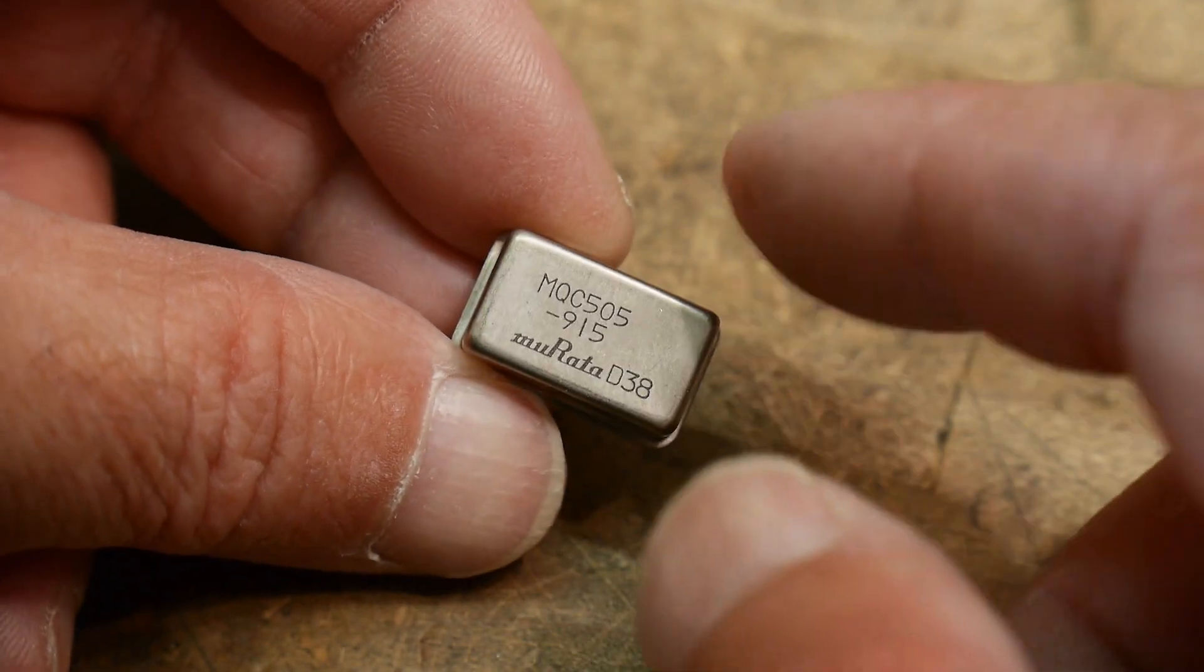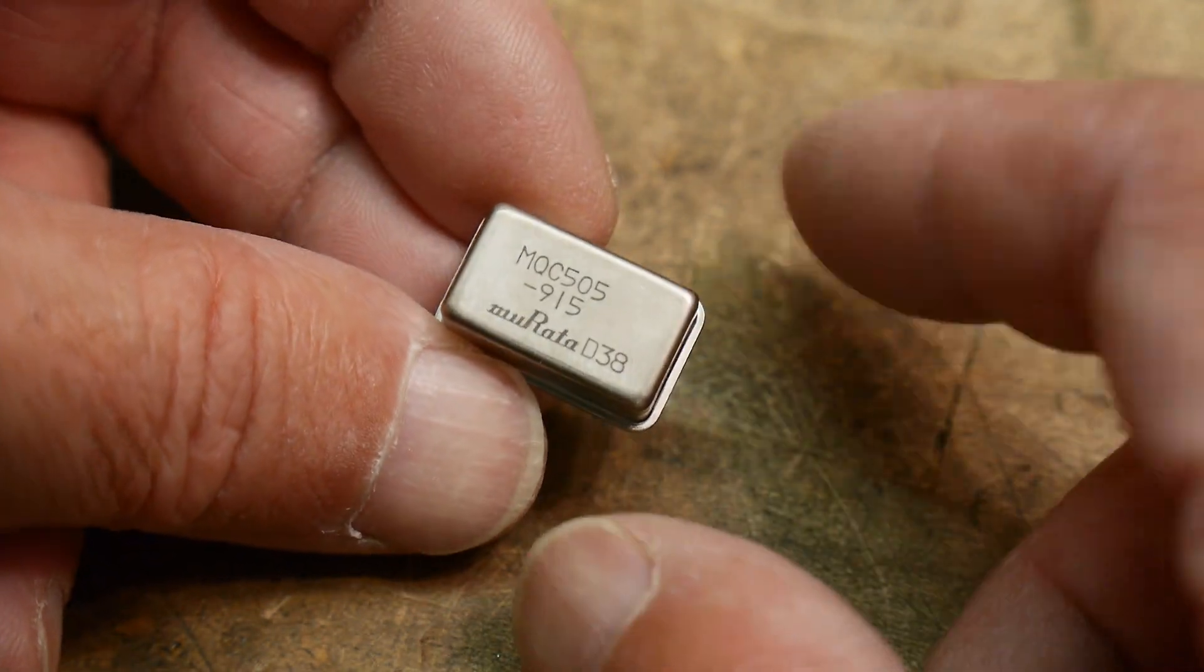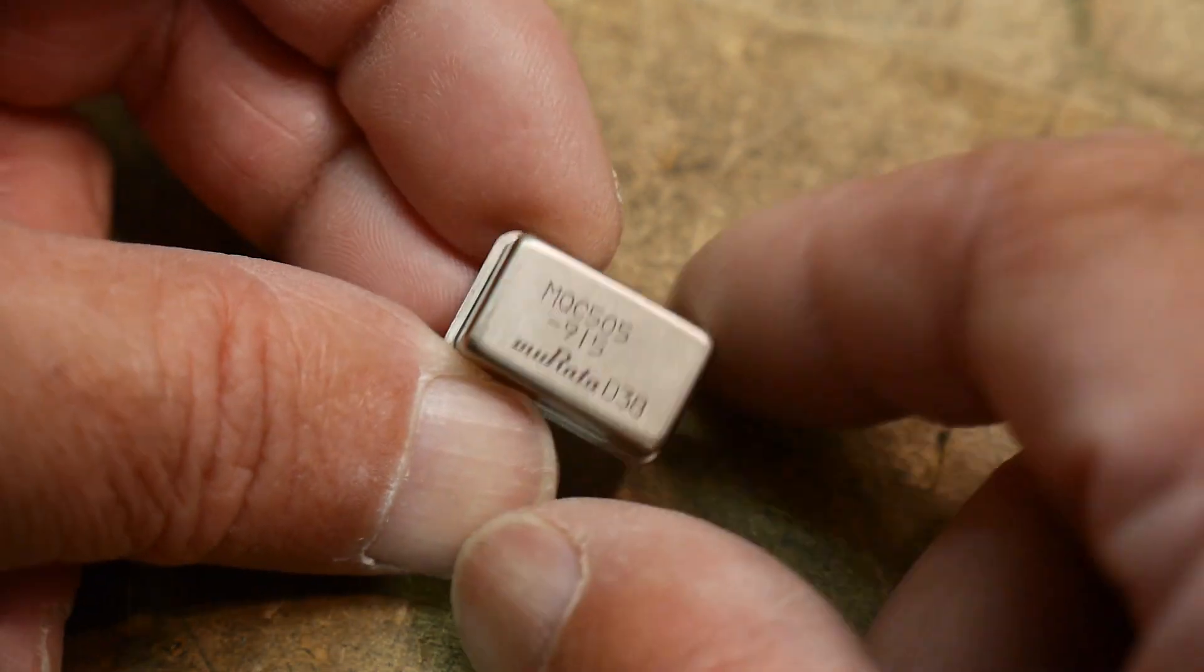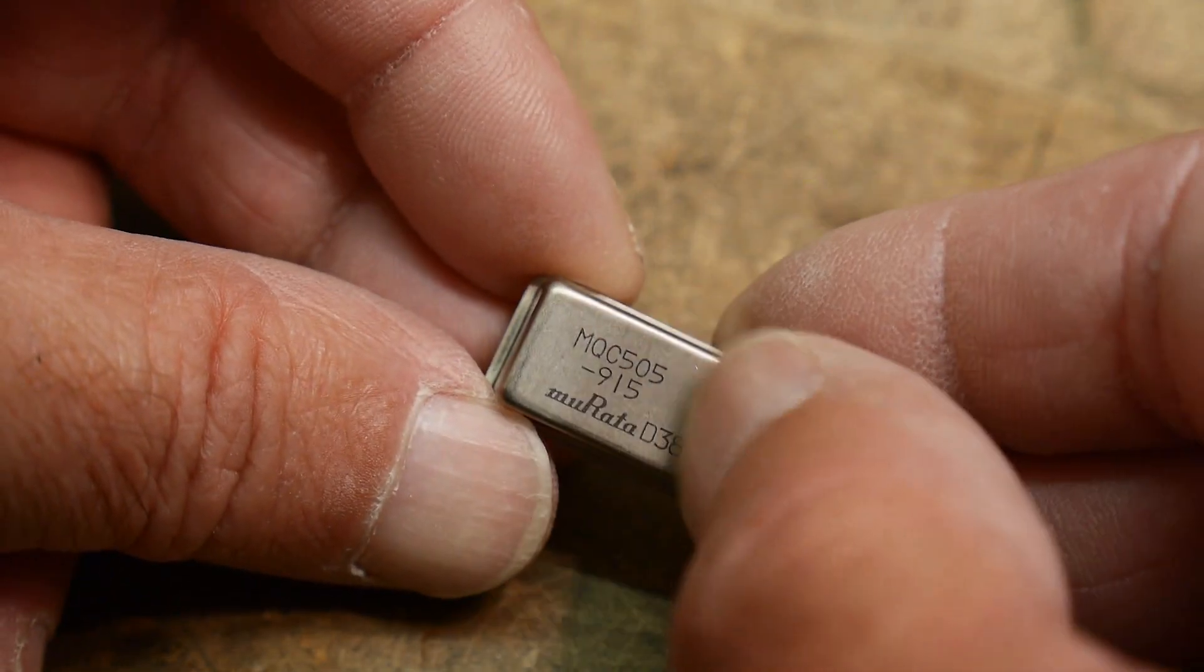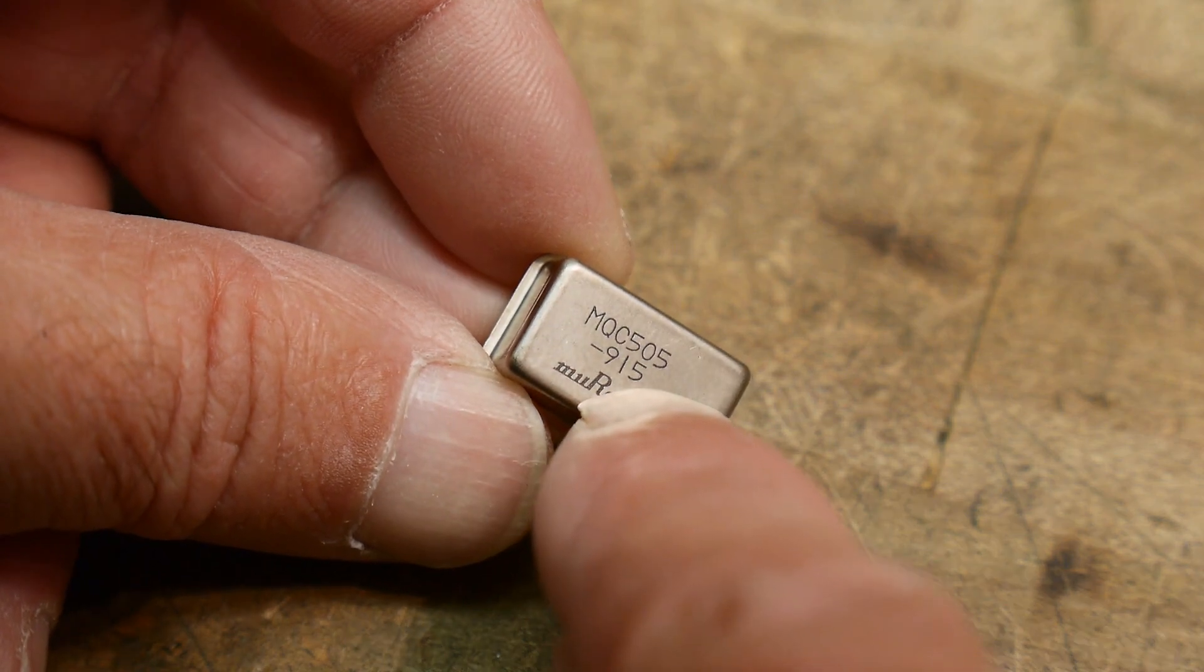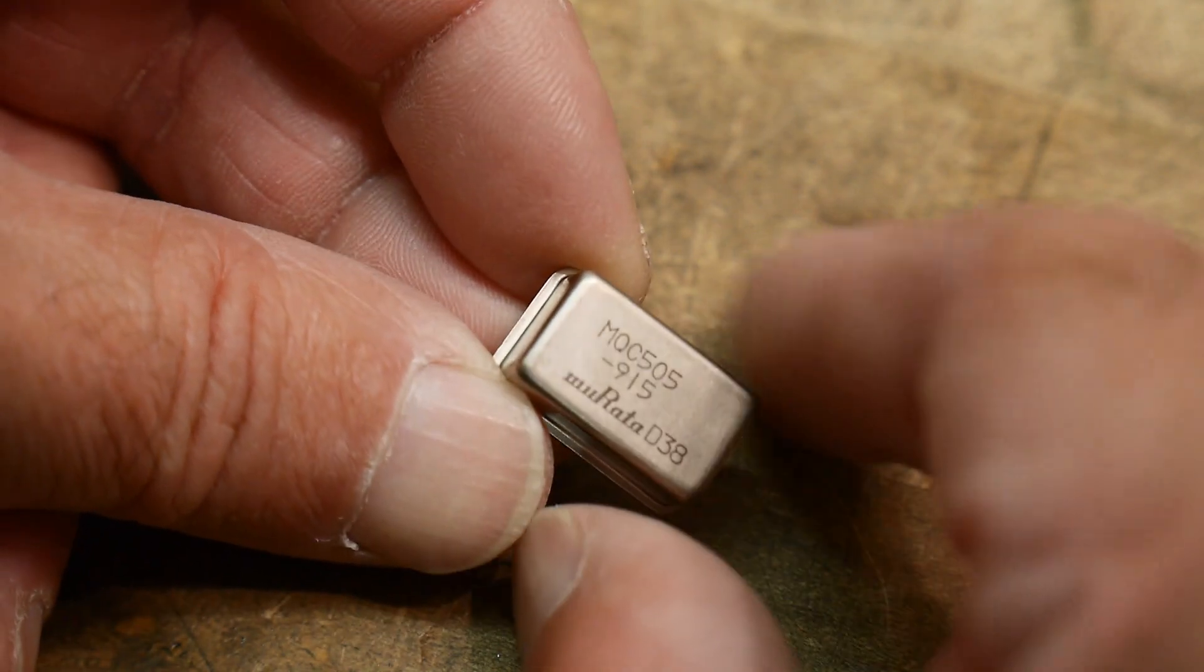So these were, I believe, made for cellular, not cellular telephones, but wireless telephones. Remember those? It's made for wireless telephones, so the little dash 1 915 is 915 megahertz.